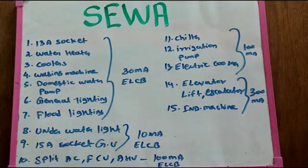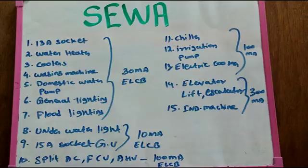We are going to use 10mA for speed AC. For FEHU, 100mA. We are going to use 300mA, then 100mA for electric cooker, industrial machine, elevator, and electric motor. This is not 300mA or 500mA.